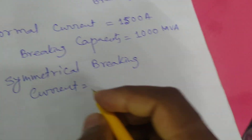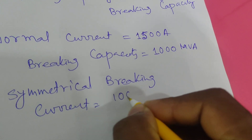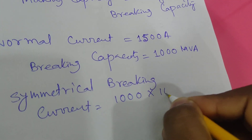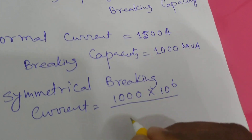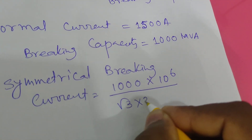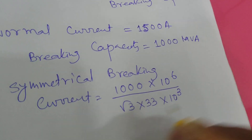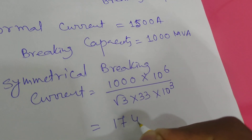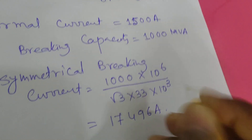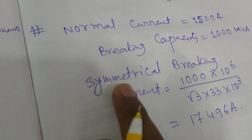The symmetrical breaking current equals 1000 × 10⁶ divided by (√3 × 33 × 10³), which gives 17,496 ampere. So this is the symmetrical breaking current.